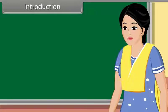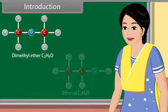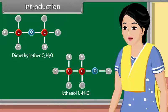The organic compounds which have same molecular formula but different configurations are called isomers. The examples of isomers are dimethyl ether and ethanol — they have same molecular formula but different configuration.